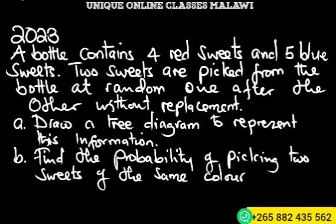Let's see the solution of this question. It's a probability question from 2023 MANEB paper 2. A bottle contains four red sweets and five blue sweets. Two sweets are picked from the bottle at random, one after the other without replacement.